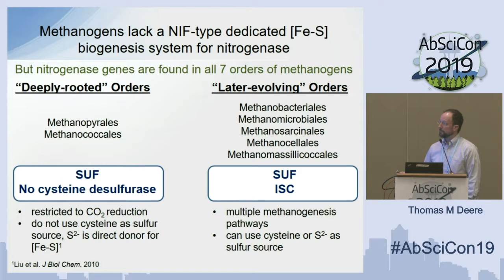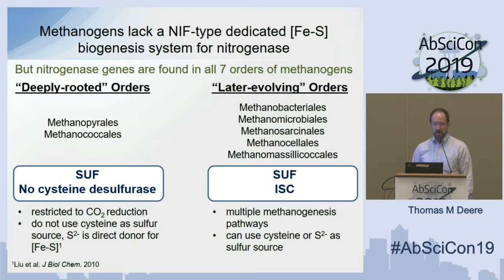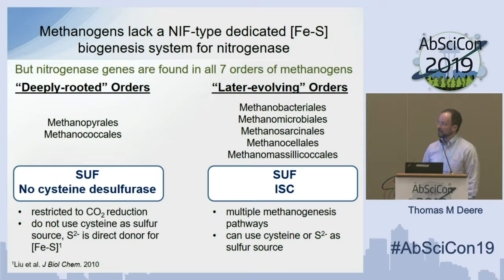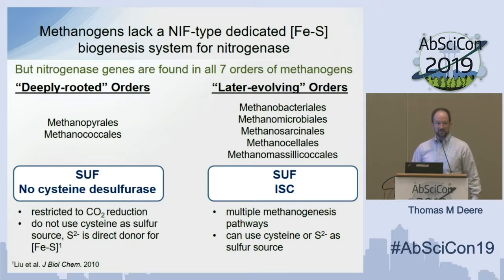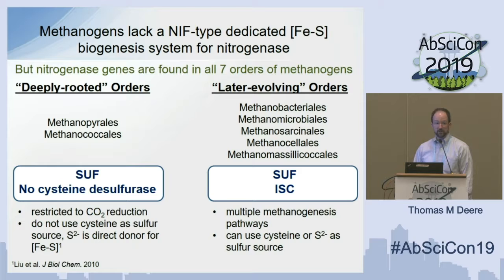Methanogens categorically seem to lack a nif-type dedicated biogenesis system for nitrogenase, which is surprising because you can find the core nitrogenase genes in members of all seven orders of extant methanogens. The two deeply rooted orders are somewhat metabolically restricted to CO₂ reduction, do not use cysteine as a sole sulfur source, and there's evidence that inorganic sulfide is the direct donor for iron-sulfur clusters — which flies in the face of what we know from bacteria and eukaryotes. They are not predicted to code for a cysteine desulfurase, just the core suf proteins, and those suf proteins appear universally conserved in methanogens and even more broadly in archaea.